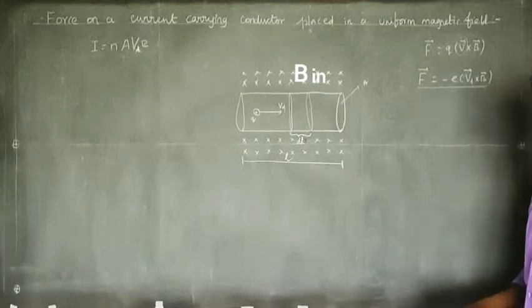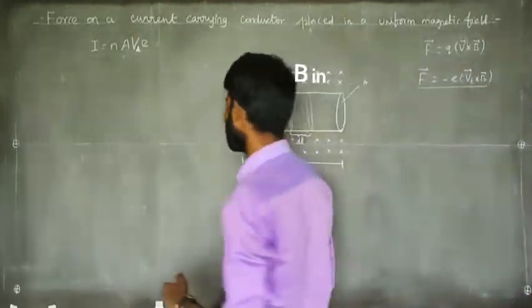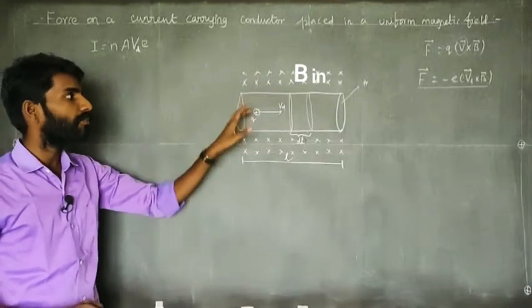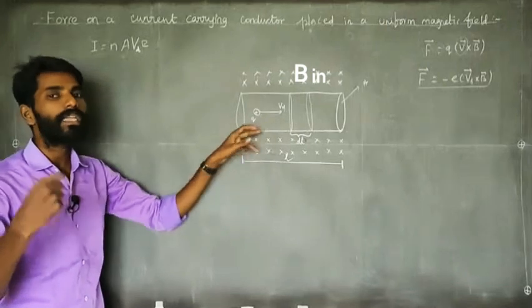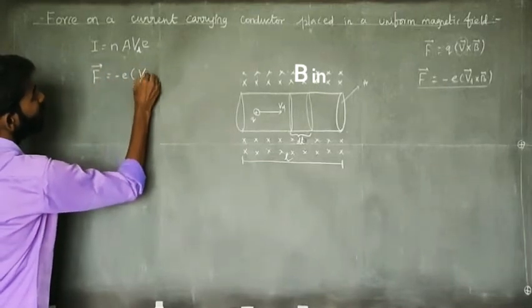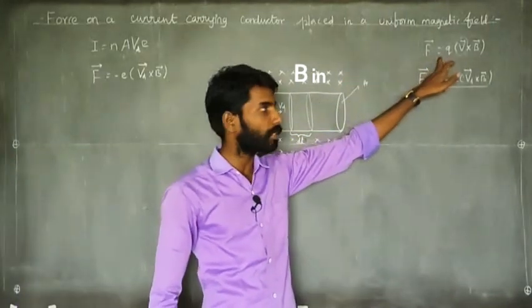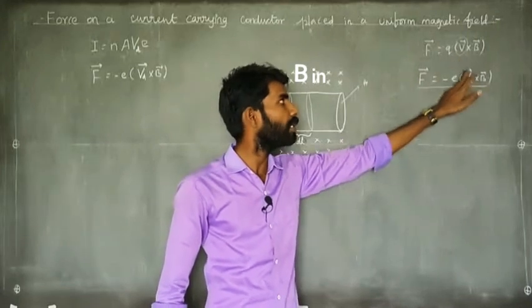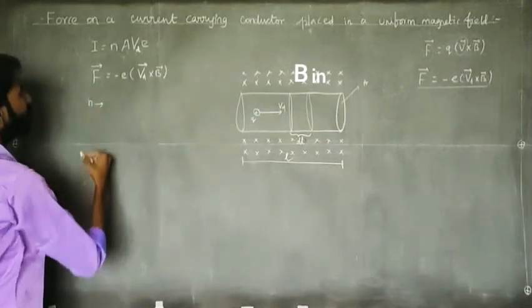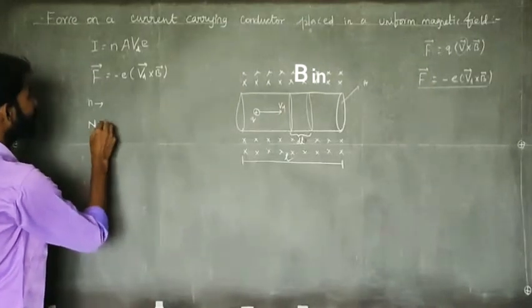So this is the force. The magnetic field in the conductor acts on the free electrons. The free electrons experience a magnetic force. So the force experienced by a free electron of a current-carrying conductor placed in a magnetic field is: f vector is equal to minus e times Vd cross B. Here, for the electron, the charge sign is minus. Now, small n is the number of free electrons per unit volume.